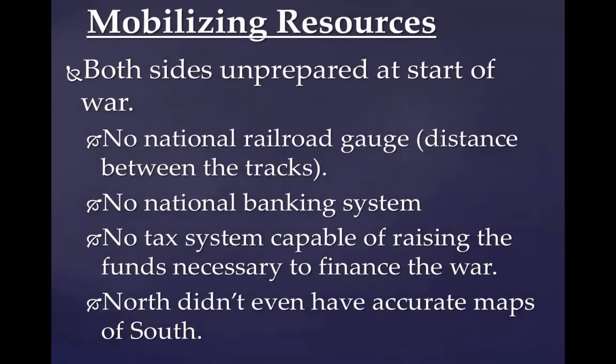Both sides were really unprepared at the start of this war. There was no national railroad gauge — track sizes differed, so trains couldn't always travel through. There was no national banking system, no tax system capable of raising the necessary funds to finance the war. The North didn't even have accurate maps of the South. Being this unprepared was going to be problematic given the new technologies that were rapidly changing the nature of combat.